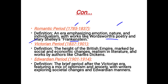Then we have the Victorian period, which started from 1837 to 1901. Its definition is the height of the British Empire, marked by social and economic changes, realism in literature, and notable works by authors like Charles Dickens.